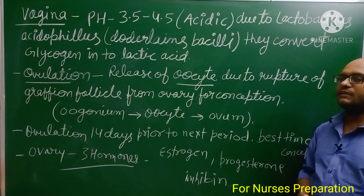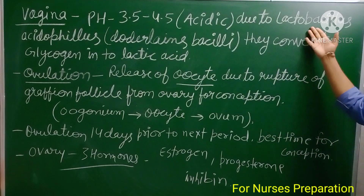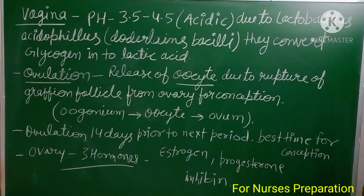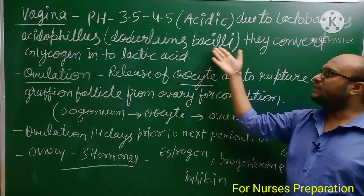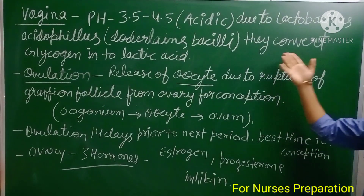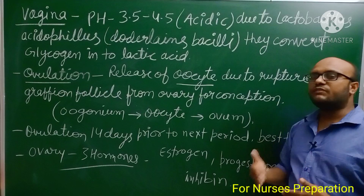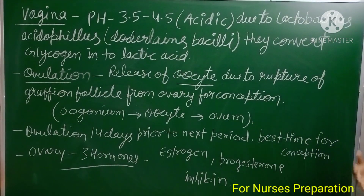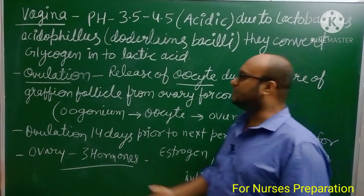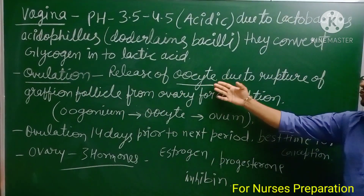The normal pH of the vagina is 3.5 to 4.5 — it is highly acidic. This acidic pH is due to the presence of Lactobacillus acidophilus, also known as Doderlein's bacilli. These bacteria convert glycogen into lactic acid, making the vaginal pH acidic.